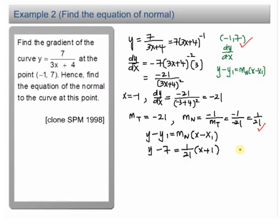We can arrange this in the form of y equals mx plus c or in the general form. I'll arrange it in the general form. What I'm going to do is cross-multiplication. We have 21 times y minus 7. You have 21y minus 7 times 21, you have 147. Now you have 1 times x plus 1, which is x plus 1.